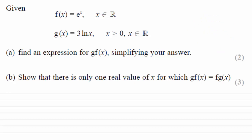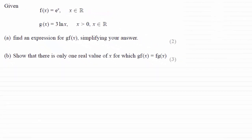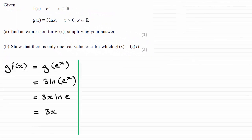Well first of all let's just recap from part A. We had to find gf of x and if you looked at part A we found that gf of x was equal to 3x.